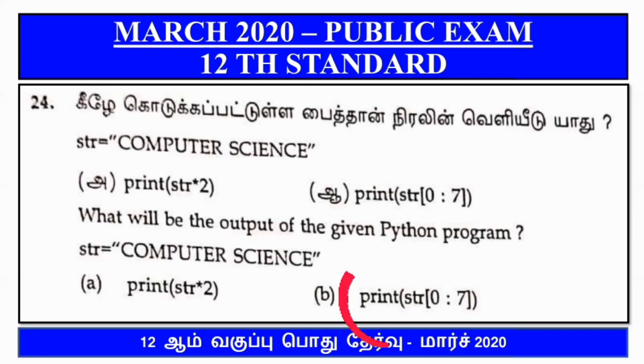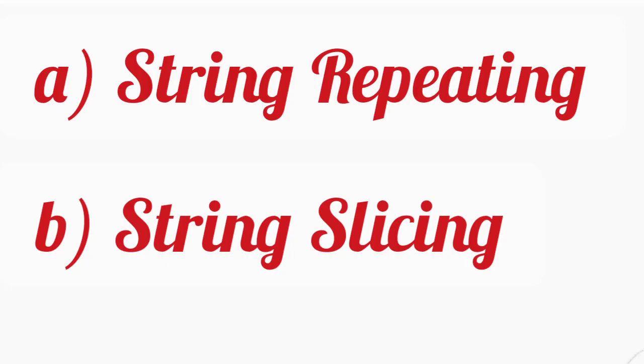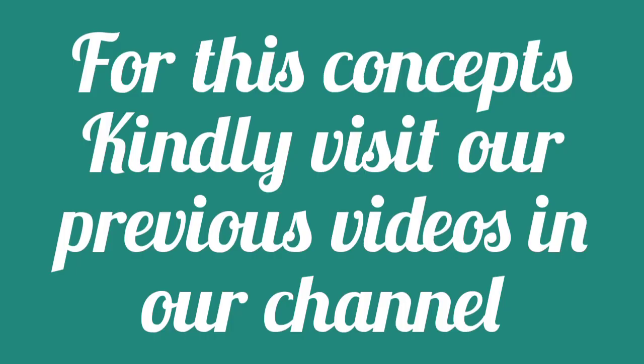Option B: Print inside the bracket STR of, in the index, starting index 0 and ending index 7. Option A is string repeating, Option B is string slicing.